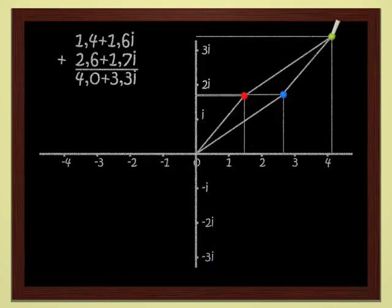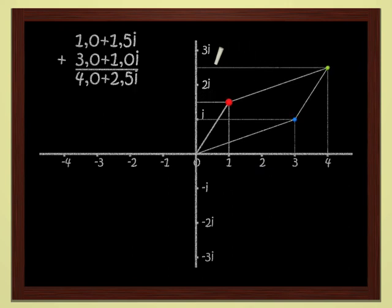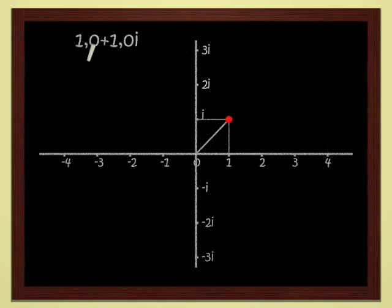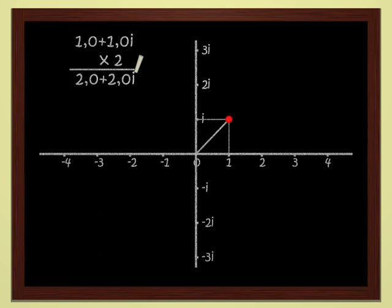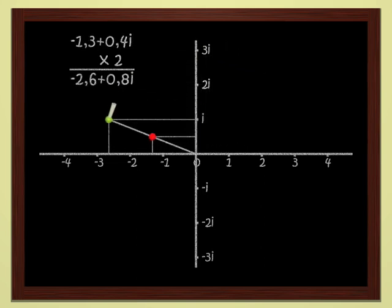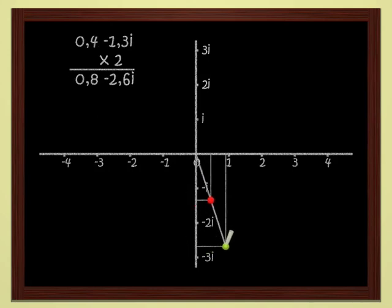Much more interestingly, these complex numbers can also be multiplied, just like real numbers. We know how to multiply a complex number by 2, for instance. 2 times 1 plus 2i gives 2 plus 4i. Geometrically, multiplying by 2 is easy — it's just scaling up by a factor of 2. If we double the red point, we get the green point.